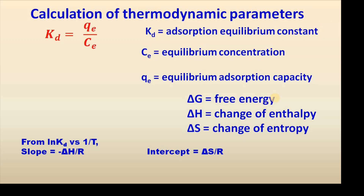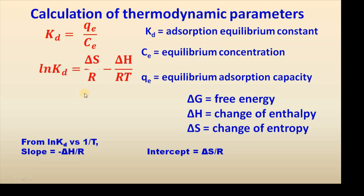Three different equations are used for calculation of thermodynamic parameters. The first one is KD equal to Qe divided by Ce, where KD is the adsorption equilibrium constant, Ce is the equilibrium concentration, and Qe is the equilibrium adsorption capacity. The second equation is log KD equal to ΔS divided by R minus ΔH divided by RT.